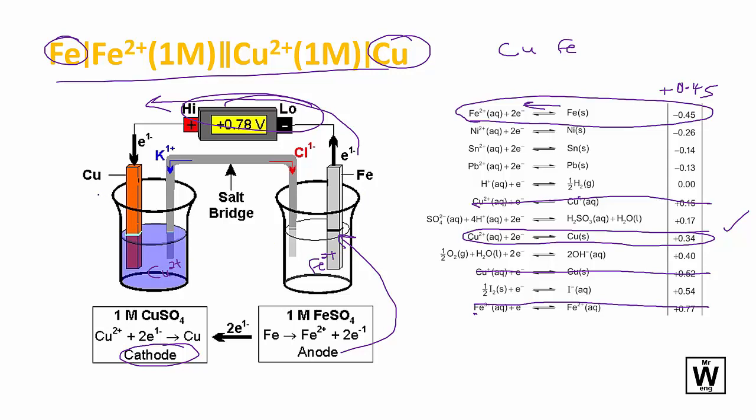This one here will be positive because the electrons are going in this direction, so this one here is negative. This actual diagram is missing one thing.